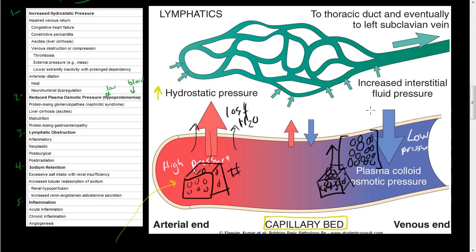On the venous end, because you have a high concentration of particles, water is going to come back inside to equalize the osmotic pressure. Osmotic pressure is pressure due to the number of particles per volume. Because we have a decreased osmotic pressure here, water will be sucked back into the veins to return to the heart.